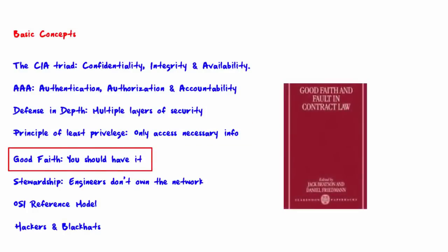The next concept is good faith. Per Wikipedia, in contract law, the implied covenant of good faith and fair dealing is a general presumption that the parties to a contract will deal with each other honestly, fairly, and in good faith, so as not to destroy the right of the other parties to receive the benefits of the contract. In terms of information security, this means that information on your network belonging to others should be protected by all reasonable means.